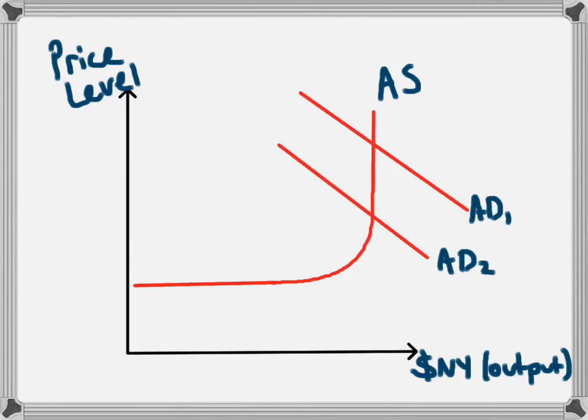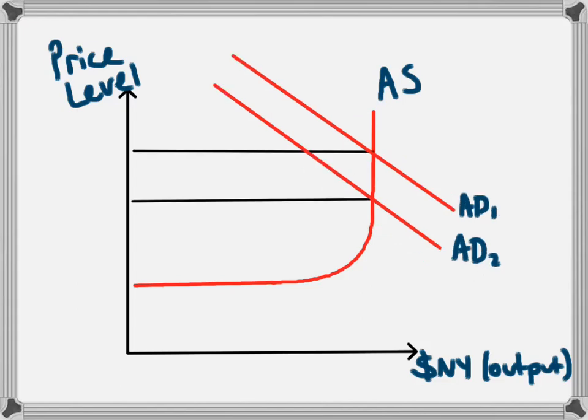We'll run backwards through these stages and look at a contractionary fiscal policy. This is where government spending reduces, and it's going to lead to a decrease in the level of aggregate demand.